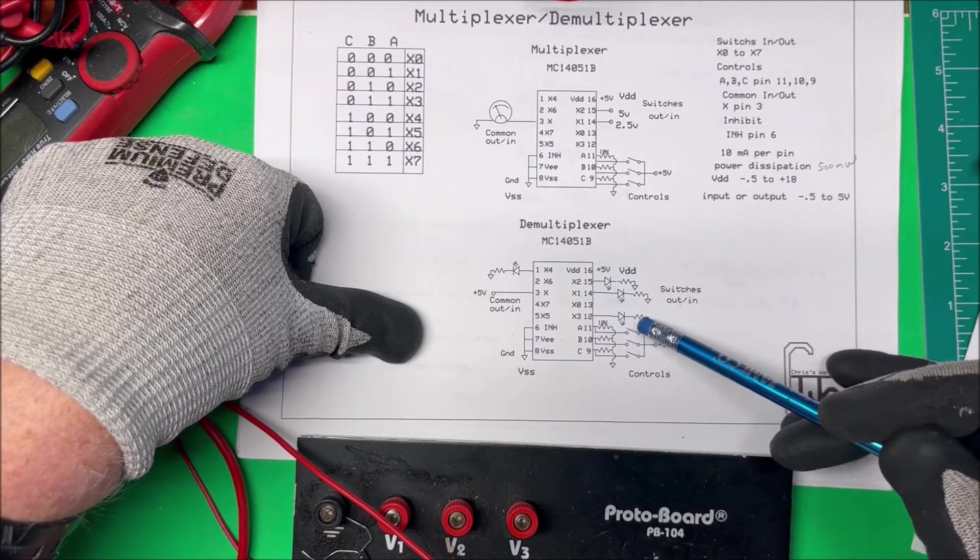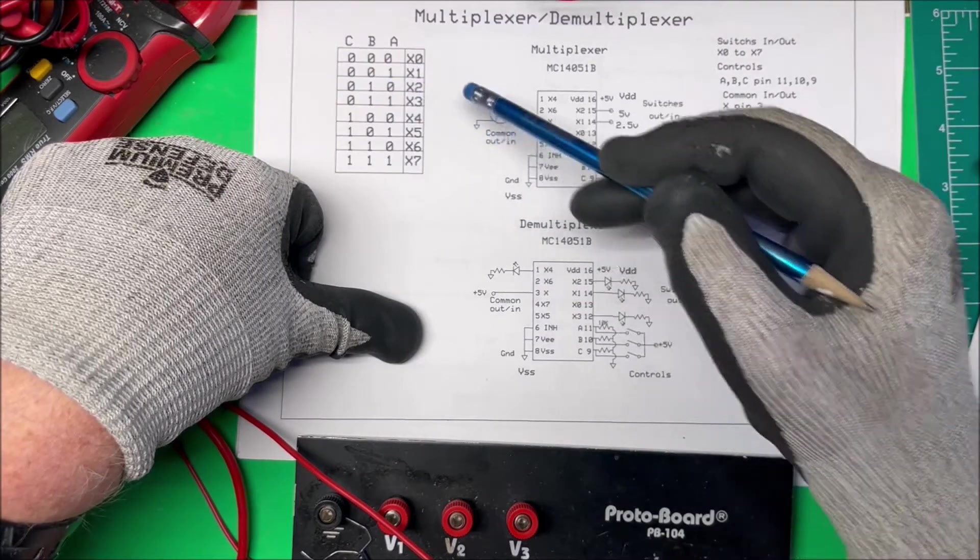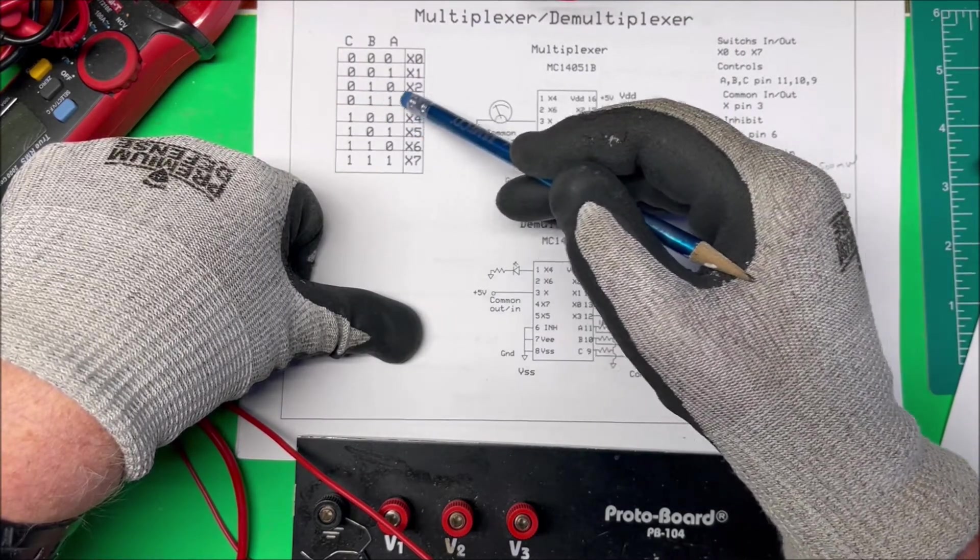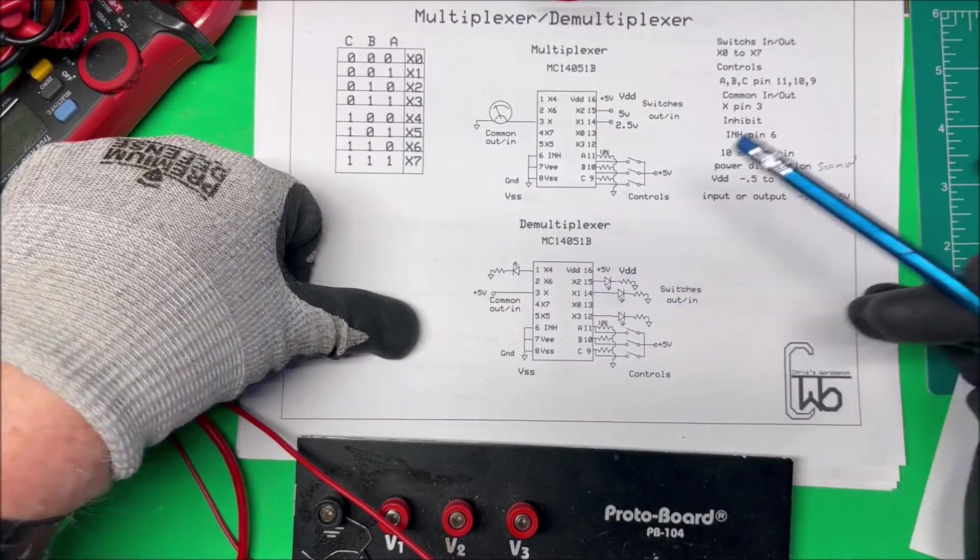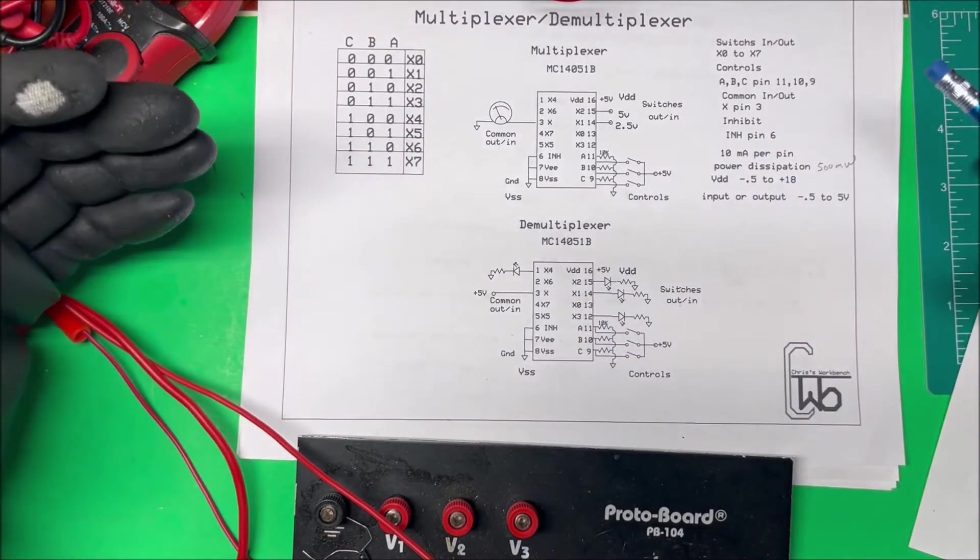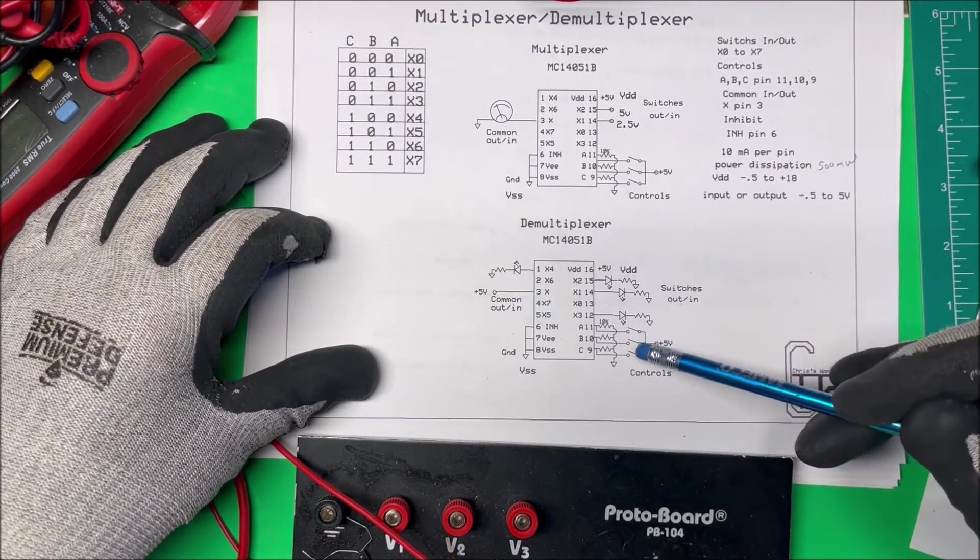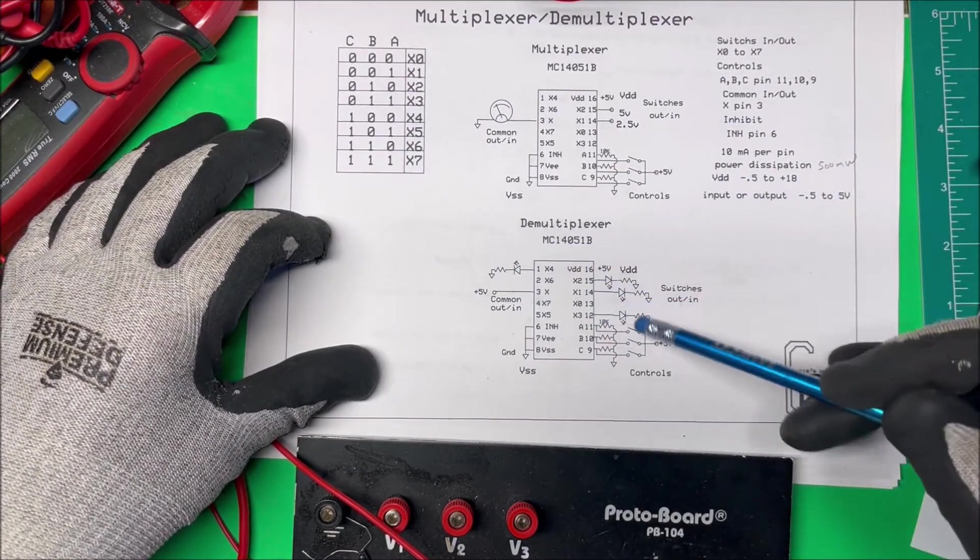So pin 1 is going to light up X1. The 2 is going to light up X2. If I put a 3 in there, it's going to be X3. And if I put a 4 on that pin there, then I'll have pin 4 lit up.